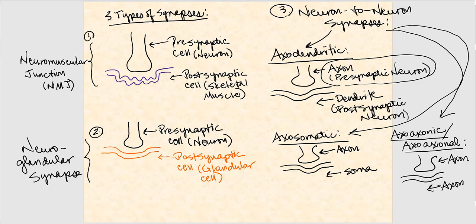The second type of neuron-to-neuron synapse is axosomatic: the axon of the presynaptic neuron synapses with the postsynaptic neuron at its soma. That's why it's called axosomatic. The third type is axoaxonic — sometimes referred to as axoaxonal — where the axon of the presynaptic neuron synapses with the axon of the postsynaptic neuron. Both terms mean the same thing.